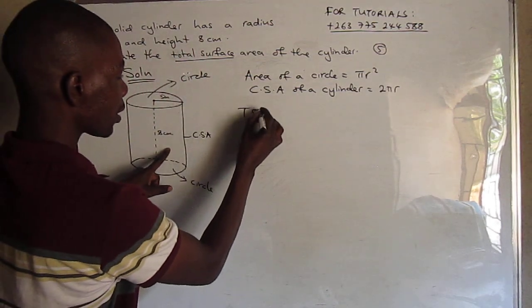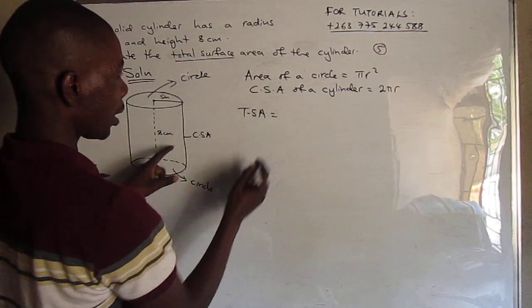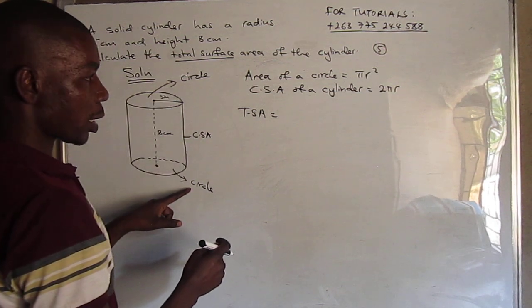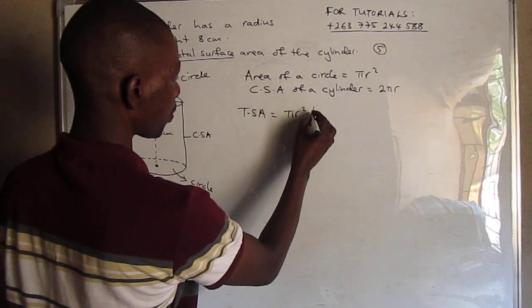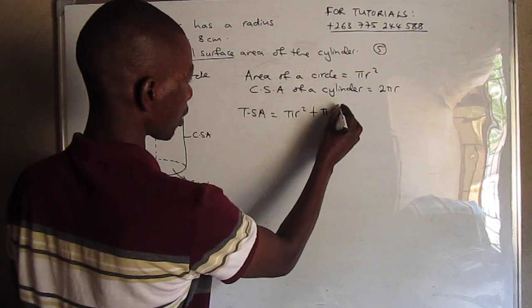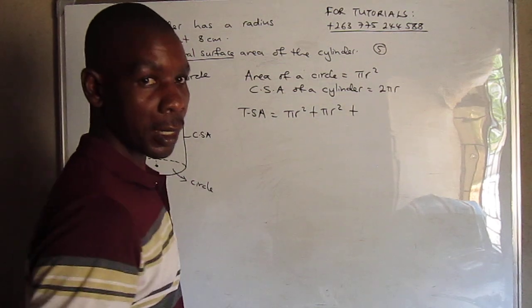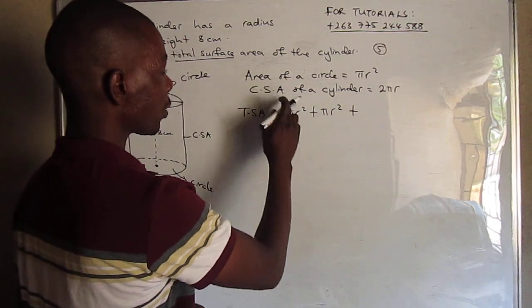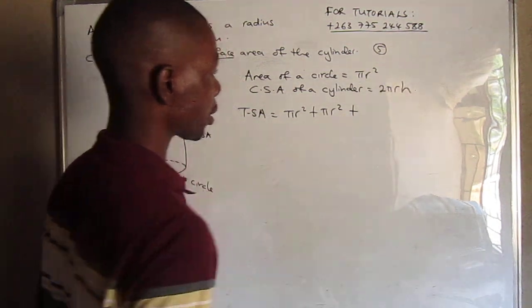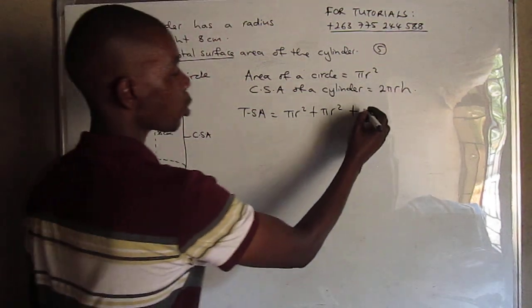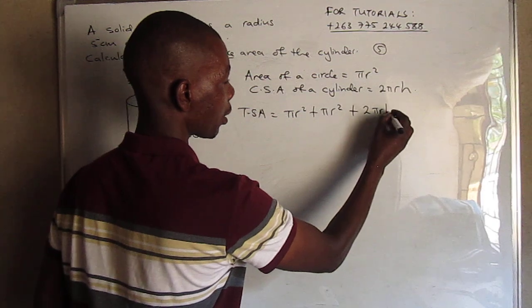So in this case, total surface area is given by area of a circle. So it will be πr² plus πr² plus again we have the curved surface area of a cylinder, which is 2πrh.